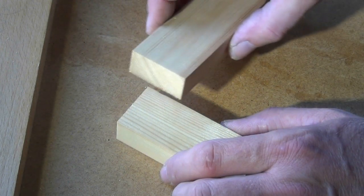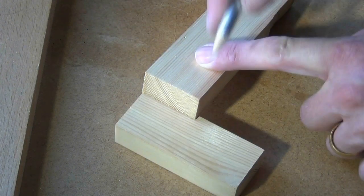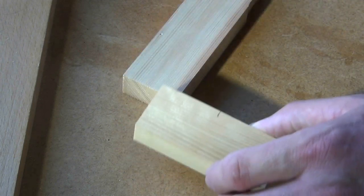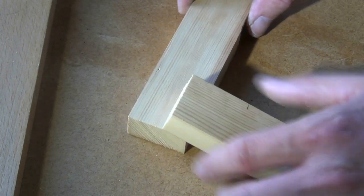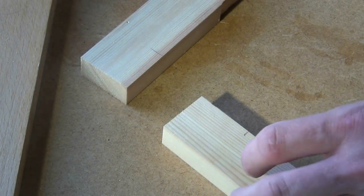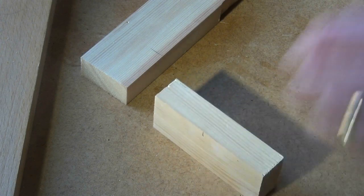I'm going to mark off the width of the one component against the length of the other, and similarly the other way around. If I quickly square around those pencil marks, I'll know how long to mark out for with the mortise gauge.